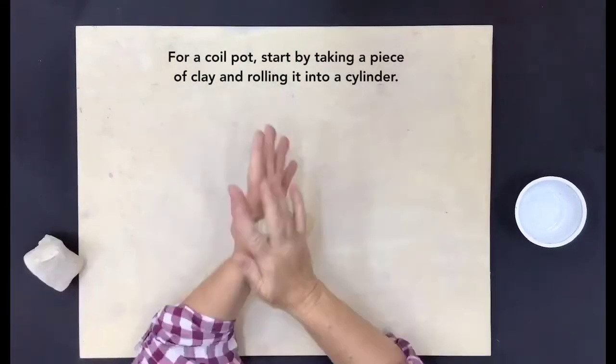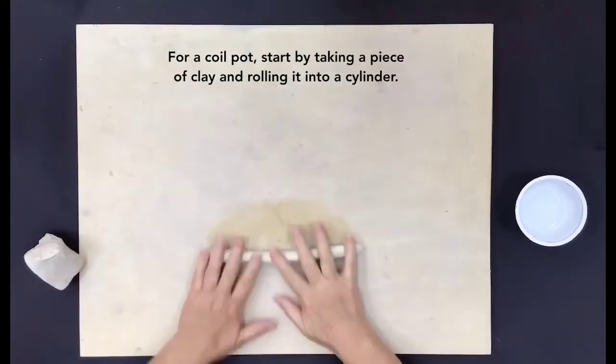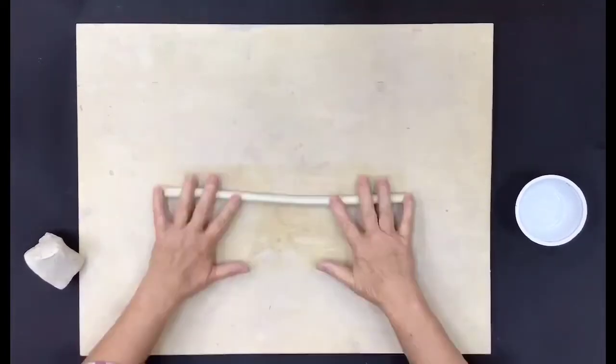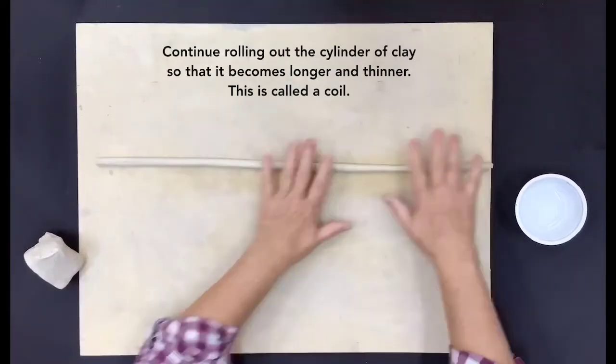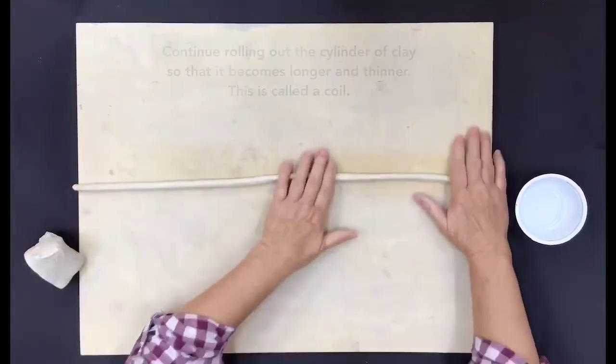For a coil pot, start by taking a piece of clay and rolling it into a cylinder. Continue rolling out the cylinder of clay so that it becomes longer and thinner. This is called a coil.